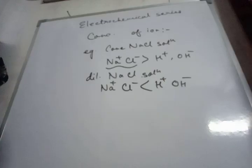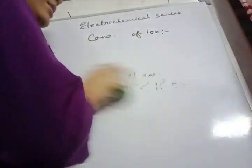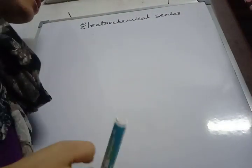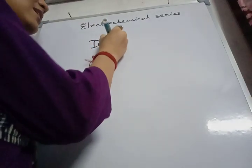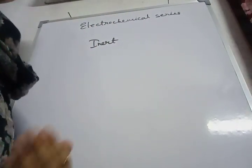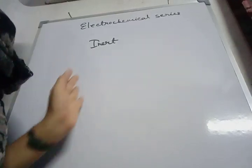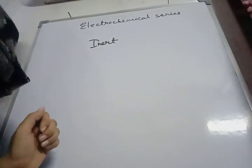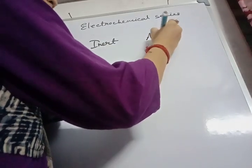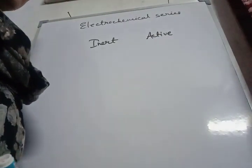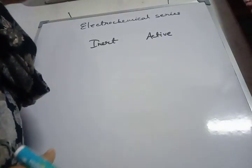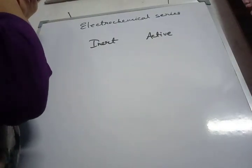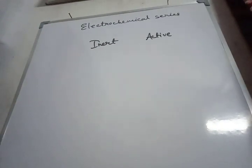The third and last factor is the nature of the electrode. There are two types: inert electrodes and active electrodes. Inert electrodes — examples are graphite, iron, and platinum — do not take part in the reaction, so electrolysis depends on the first two factors: position and concentration of ions. But in case of active electrodes such as nickel, silver, and copper, they take part in the reaction and we get unexpected or different products. That's it, class 10. Thank you.